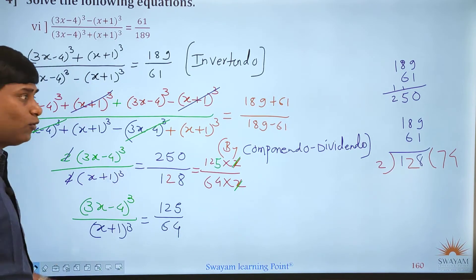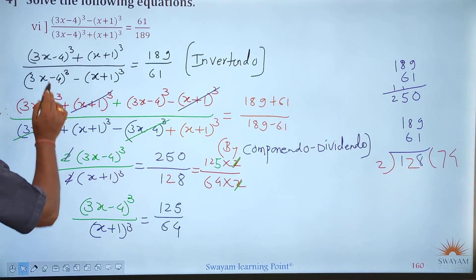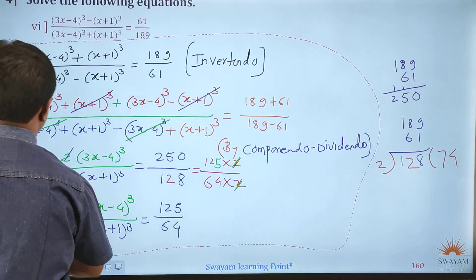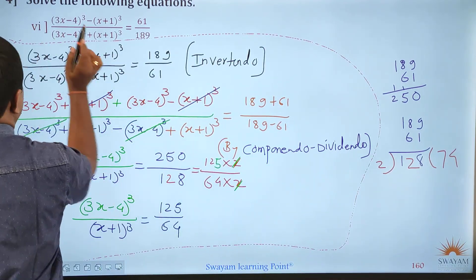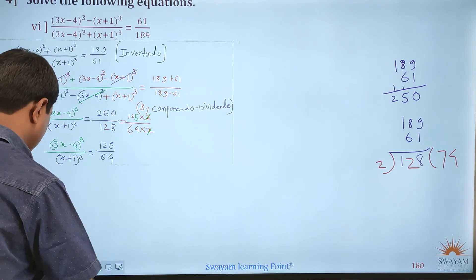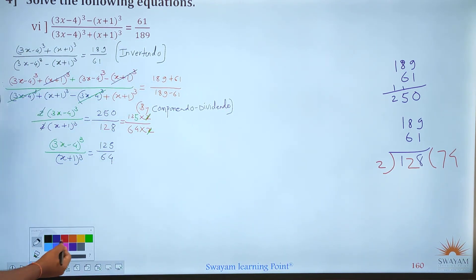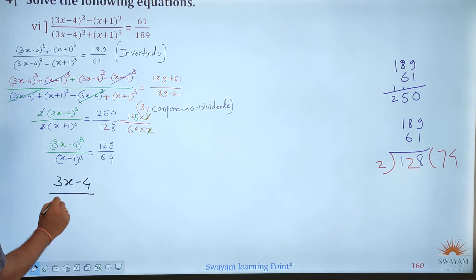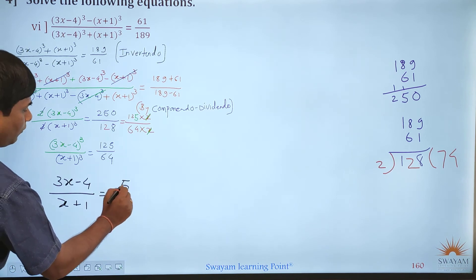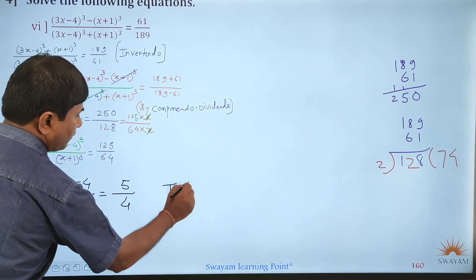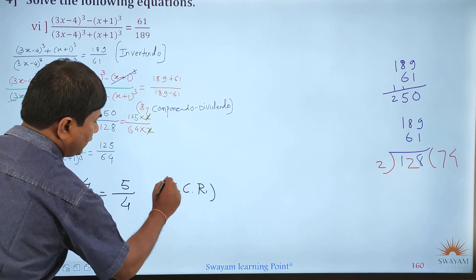Now we need to take the cube root. Before taking the cube root, note that unlike square roots, when taking cube roots the sign does not change — there is no plus/minus. Taking the cube root of both sides: (3x−4) divided by (x+1) is equal to 5 upon 4.